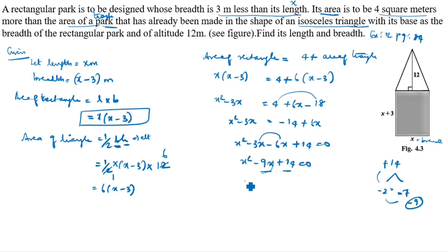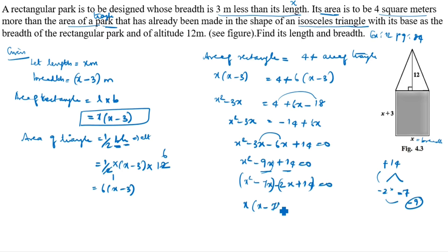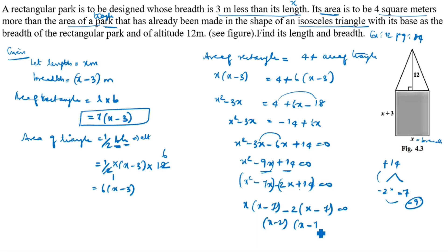So we split the middle term: x squared minus 7x minus 2x plus 14 equals 0. Taking x common from the first two terms and minus 2 from the last two: x(x minus 7) minus 2(x minus 7) equals 0. Therefore (x minus 2)(x minus 7) equals 0, giving x equals 2 or x equals 7.